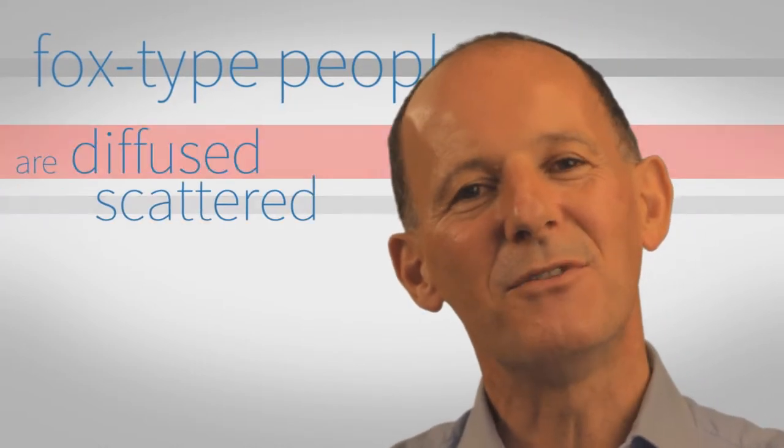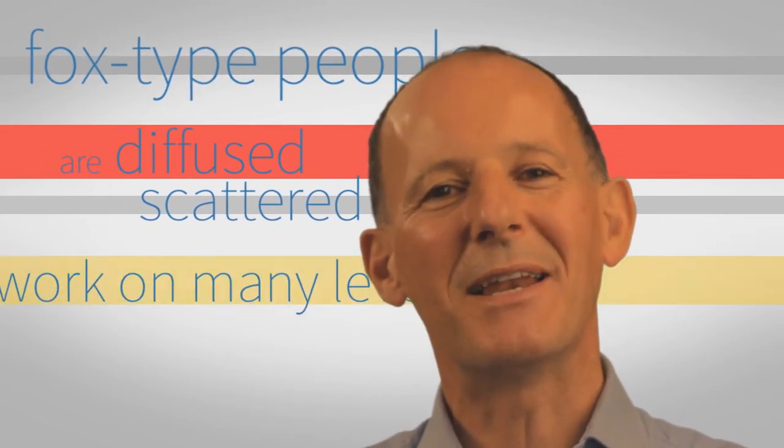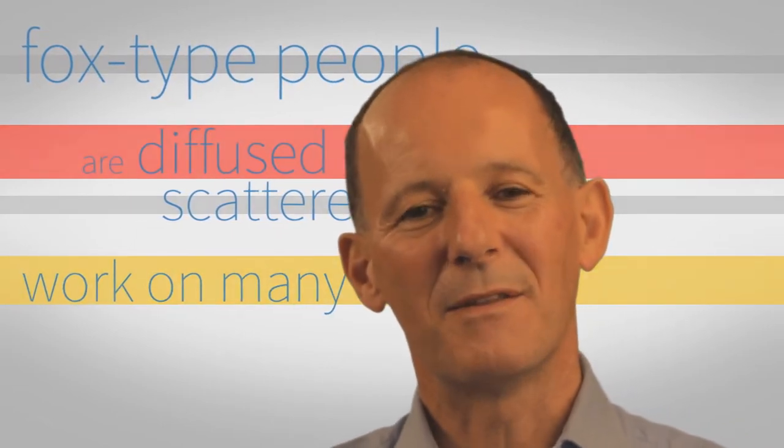Isaiah Berlin's idea was that foxes are diffused, they are scattered, they work on many, many levels. They don't pull their thinking together into one coherent whole, one unifying principle or idea. And this is their weakness—focus. They lack focus.